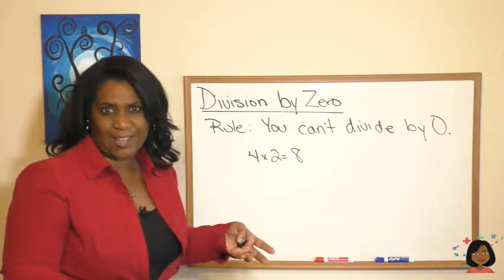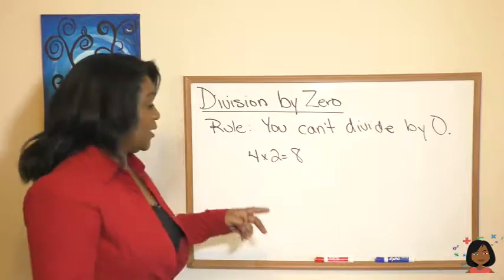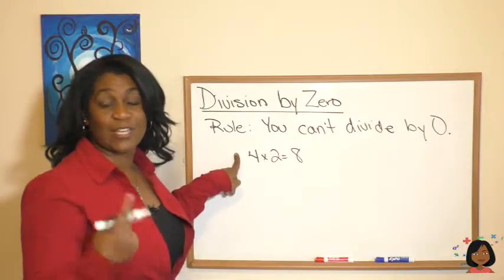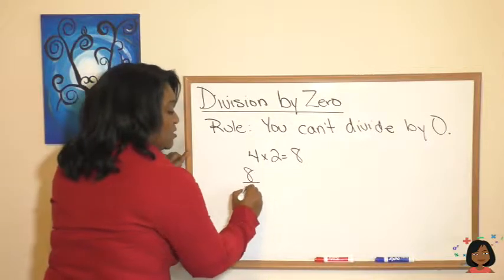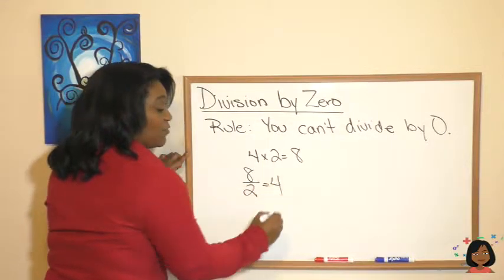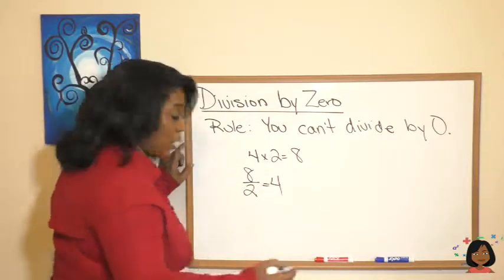We might remember way back in lesson one or two that we can take a multiplication fact and turn it into two division facts. We can do eight divided by two, and it'll give us four, or we can do eight divided by four, and it'll give us two.